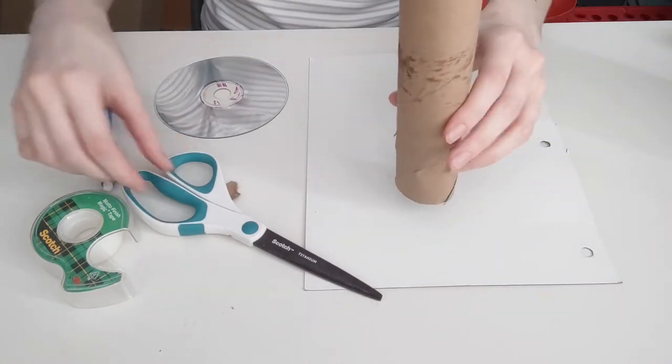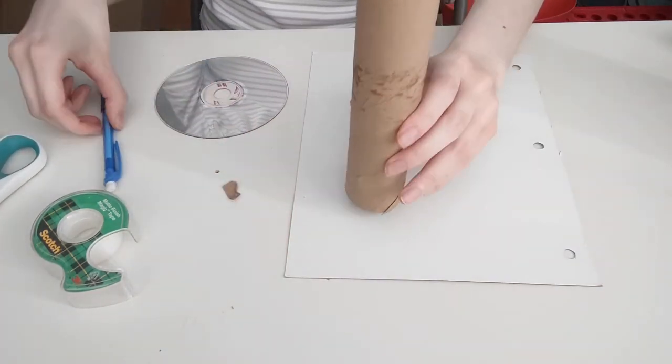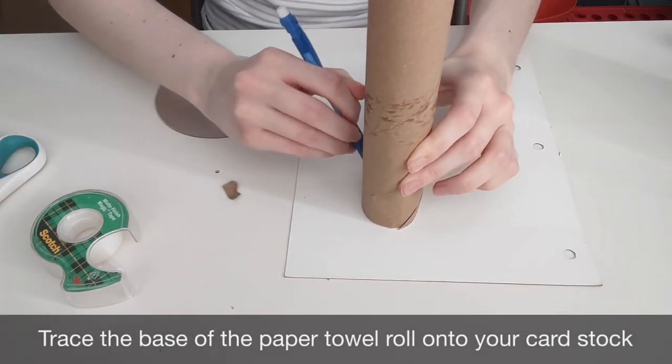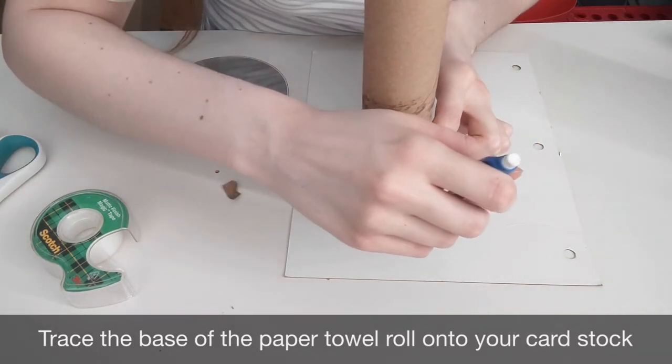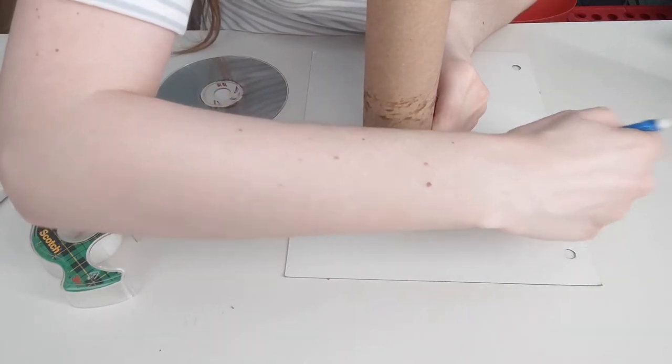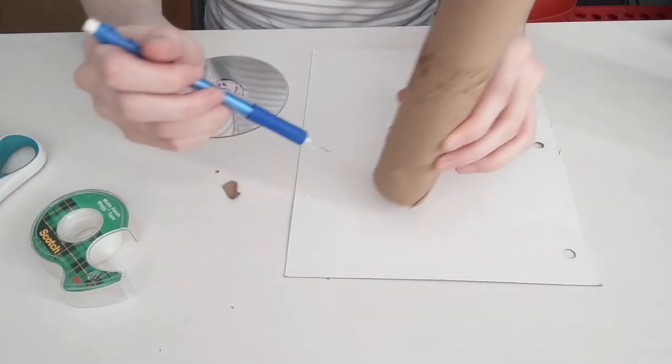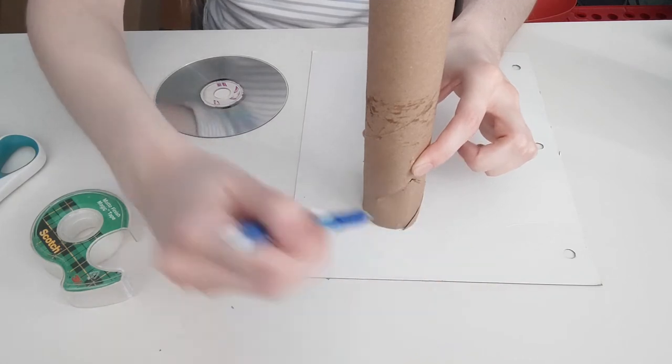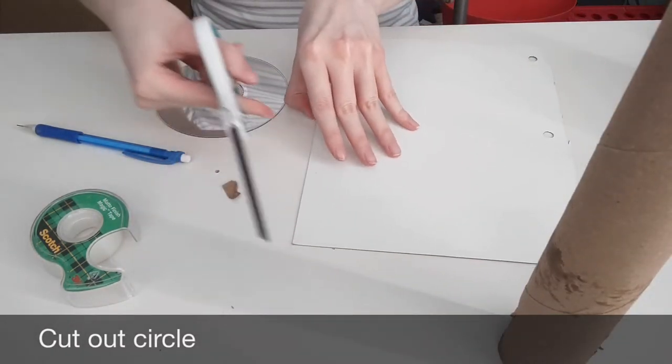So for our next step, we are going to use the cardboard or cardstock and the pencil, and we're going to trace the shape of the paper towel roll right around the circle shape. It doesn't have to be perfect, just get a good idea of the shape. Might have to be a little generous there. And we're going to cut out this circle.